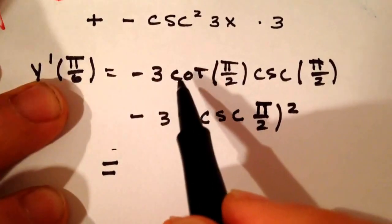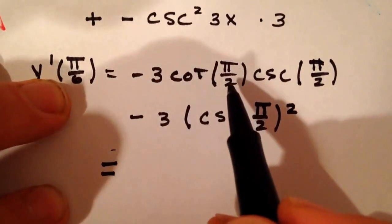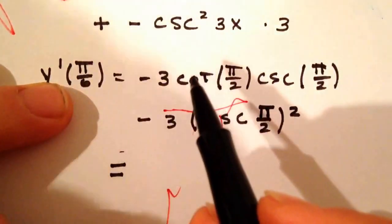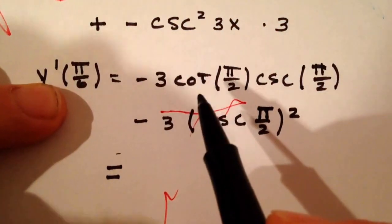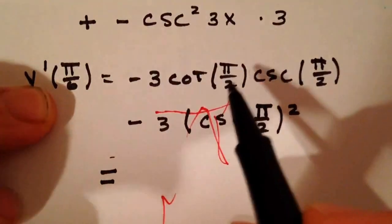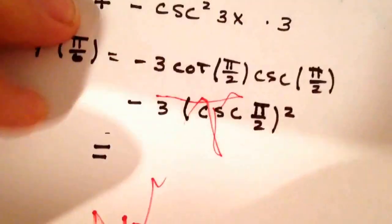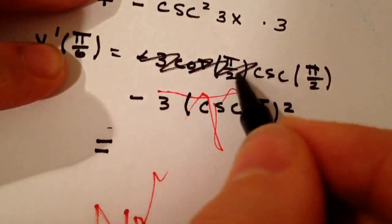So right here we need to evaluate. The cotangent of π/2 is 0. And the reason for that is that it's cosine over sine. And cosine of π/2 is 0. So that whole first term, hey Odette, out of the way. Thank you dear. That whole first term is going to go away.